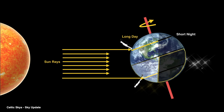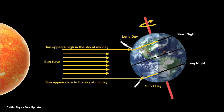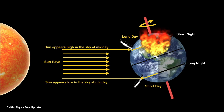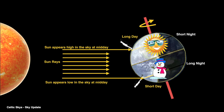This has the effect of warming the climate more in the Northern Hemisphere and cooling it more in the Southern Hemisphere. Thus, we have summer in the North and winter in the South.